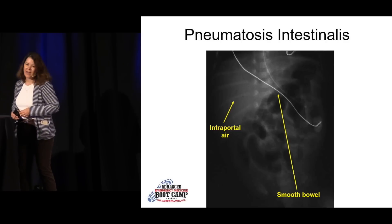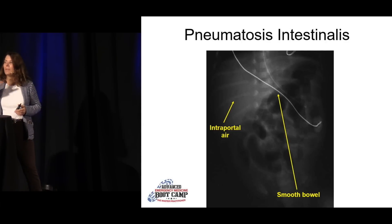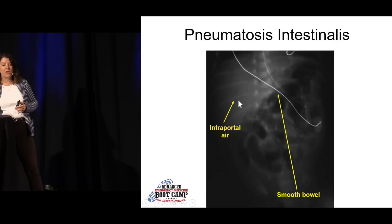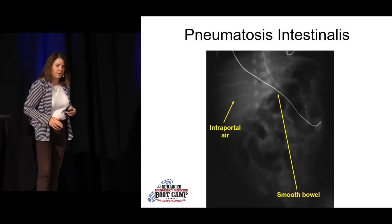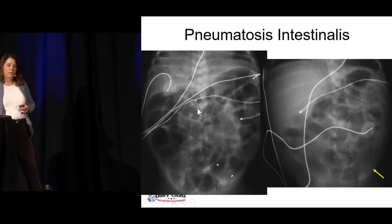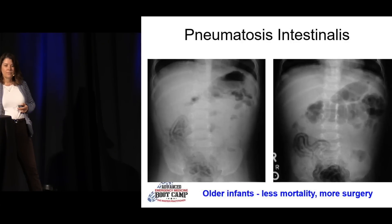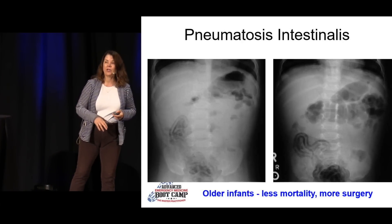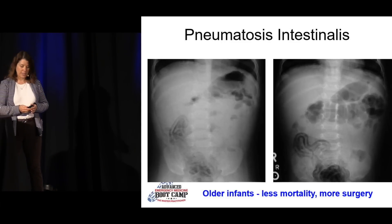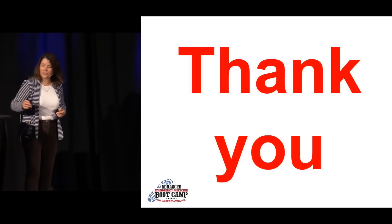Pneumatosis intestinalis — this is an overwhelming bacterial infection, tends to be in our preterm babies, though every once in a while you'll get it in an older baby. They have intraportal air — little wisps of hyperlucency in the portal area, which is not normal. Smooth bowel wall as they start to develop a bowel obstruction. You actually get air in the bowel wall — little strips of air coming through — and then air out in the soft tissue, not in the colon or intestines anymore. This clearly shows bowel air in the bowel wall — something bad is going on. Tends to be in premature kids with an overwhelming infection. If it's an older child, they tend to do a little bit better and more likely need surgery. Thank you very much.